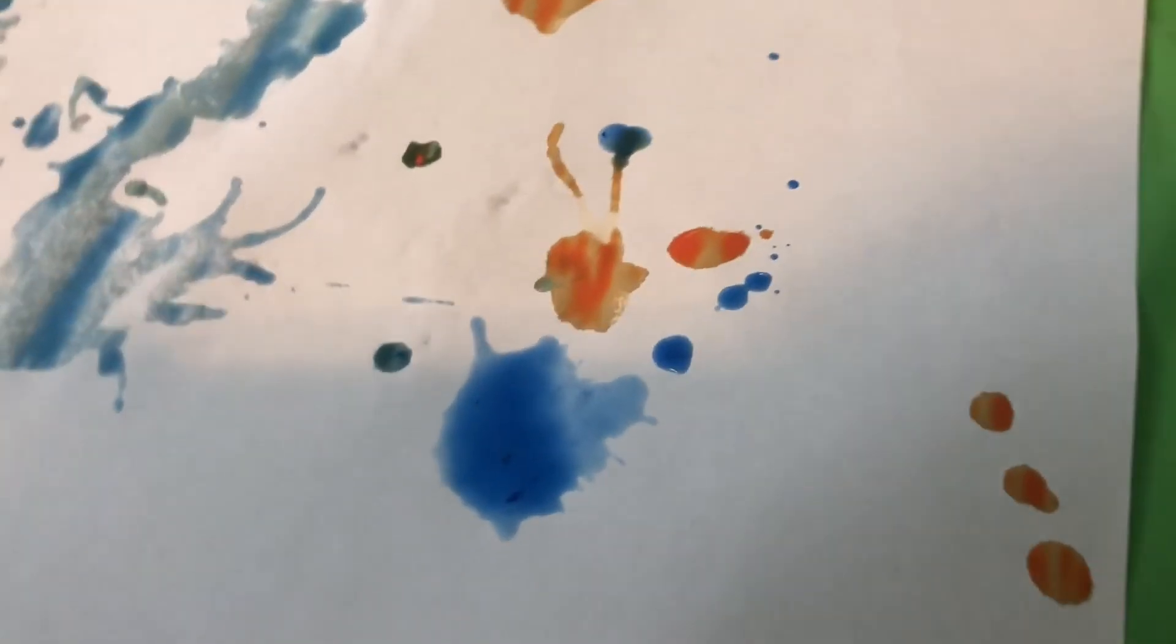I'm using orange, blue, and red, but you can use whatever colors you'd like. And once it's diluted, you take the spoon, you just drip it across your paper, and then you blow.